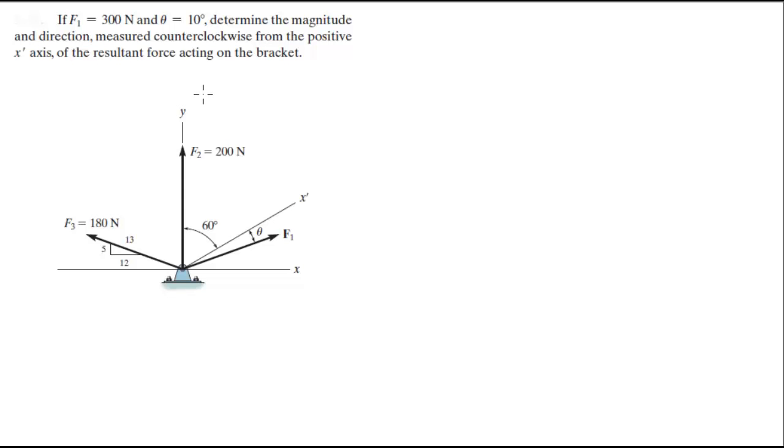For more videos visit for the sake of education.com. All right guys, now we're going to do this problem that says if F1 is 300 newtons and theta is 10 degrees, determine the magnitude and direction measured counterclockwise from the positive x prime axis. This axis measured counterclockwise.